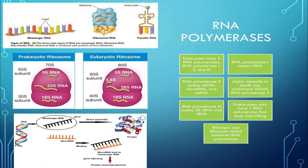Let's start talking about the eukaryotic RNA polymerases. The three are named RNA polymerase 1, RNA polymerase 2, and RNA polymerase 3. Each of these makes a different product.